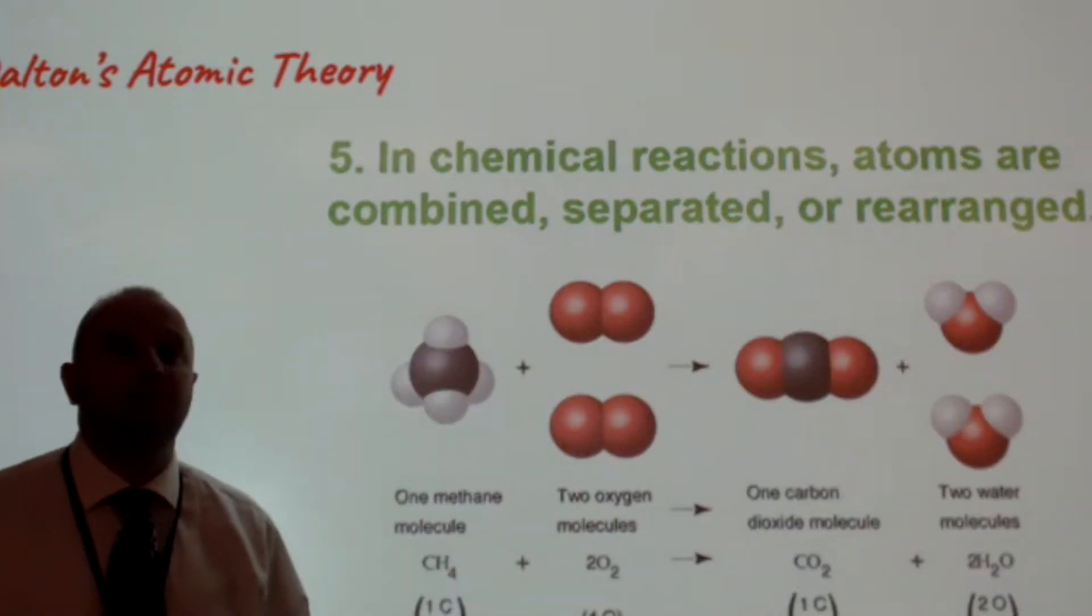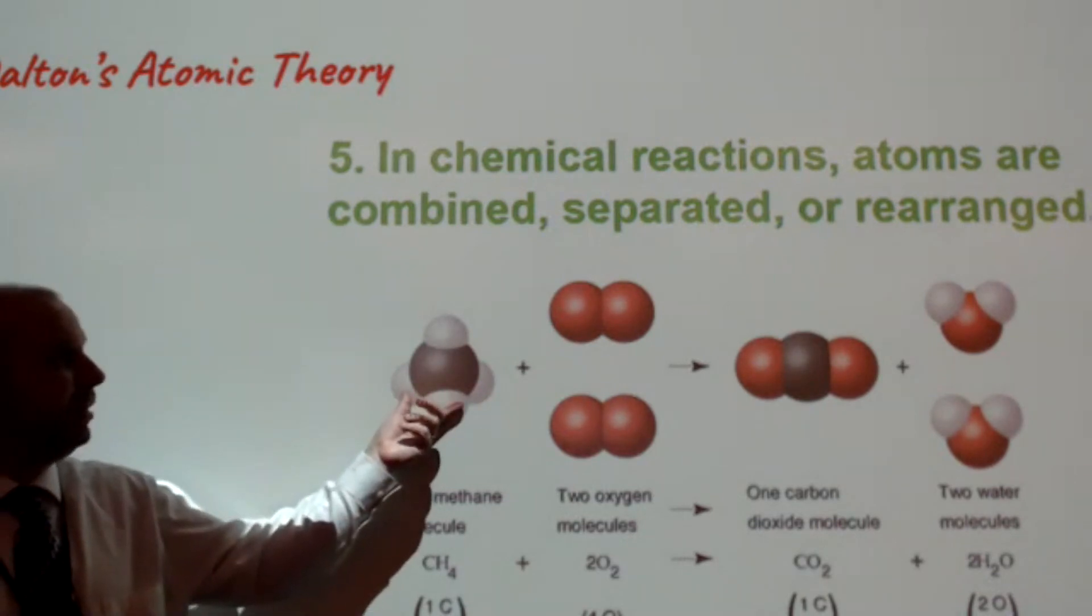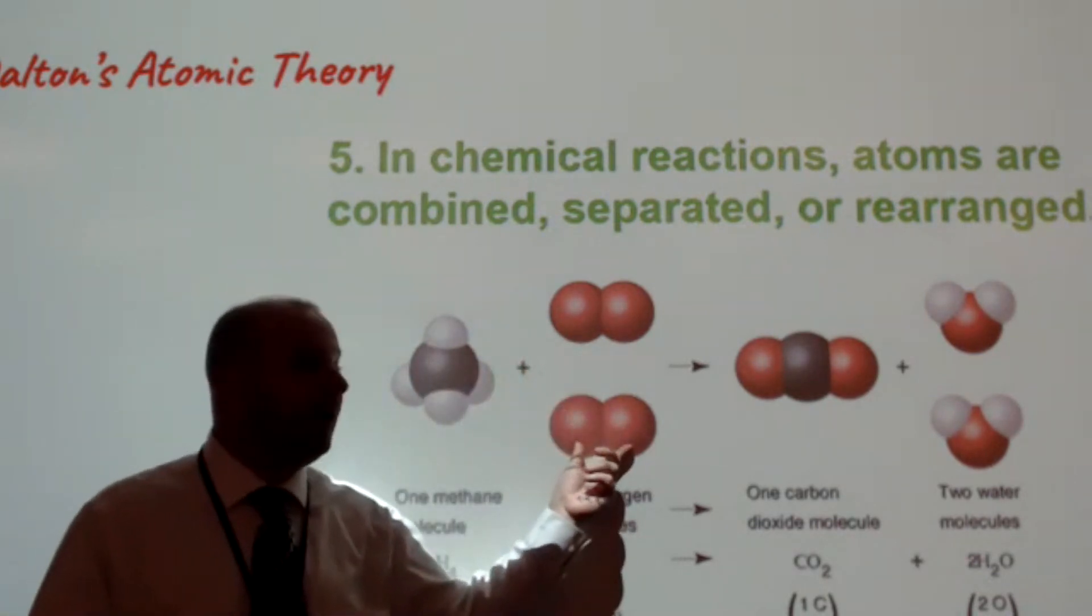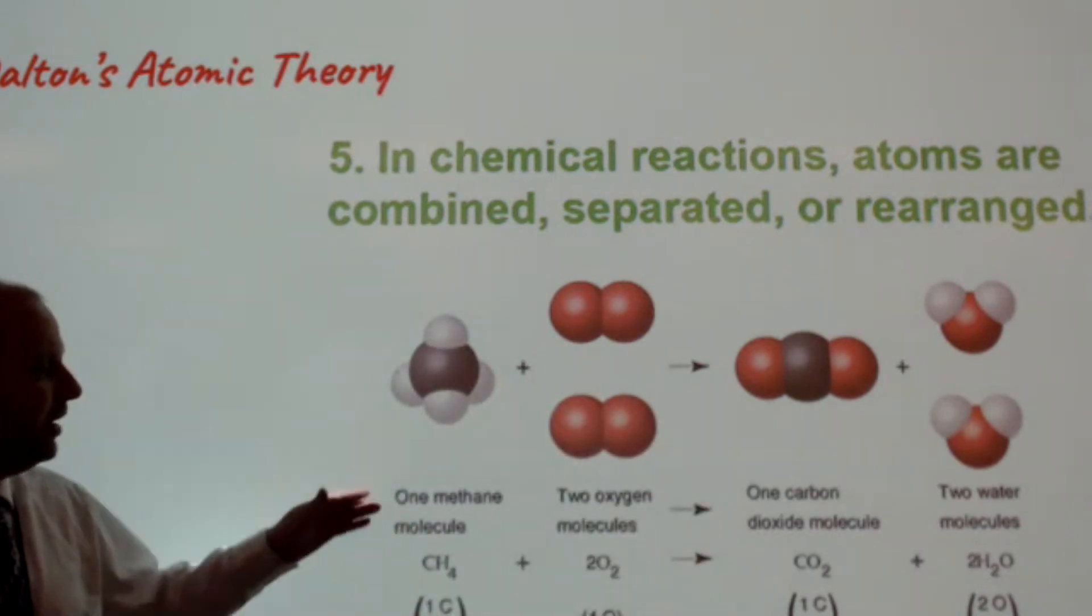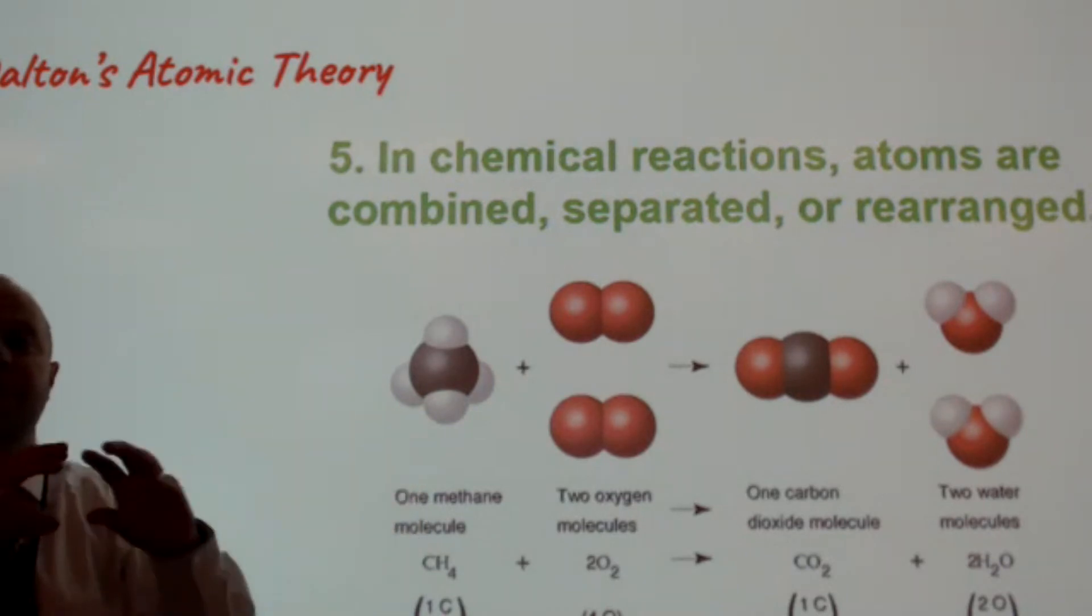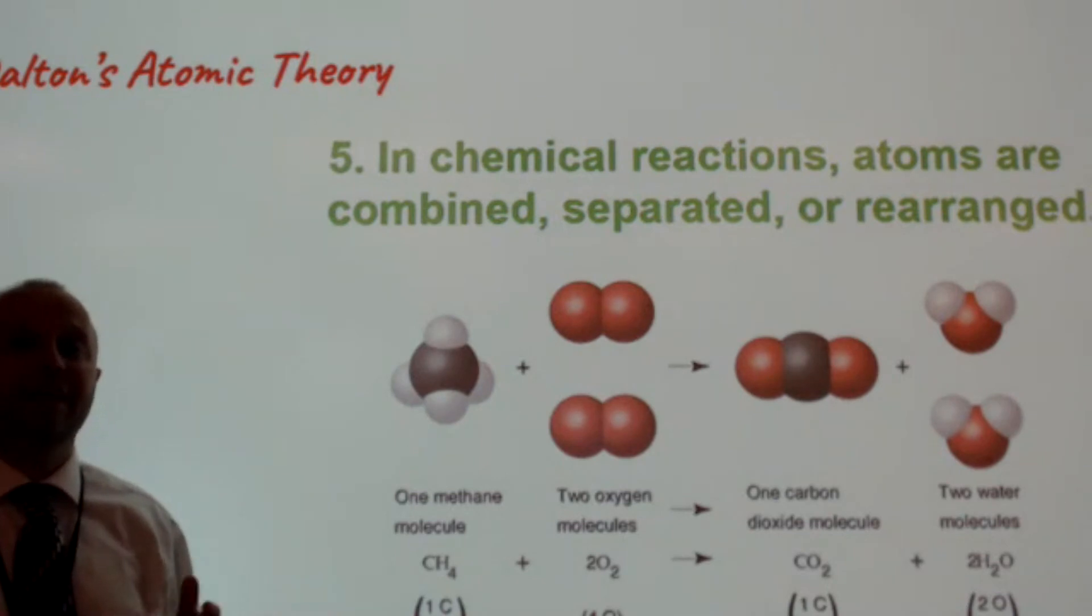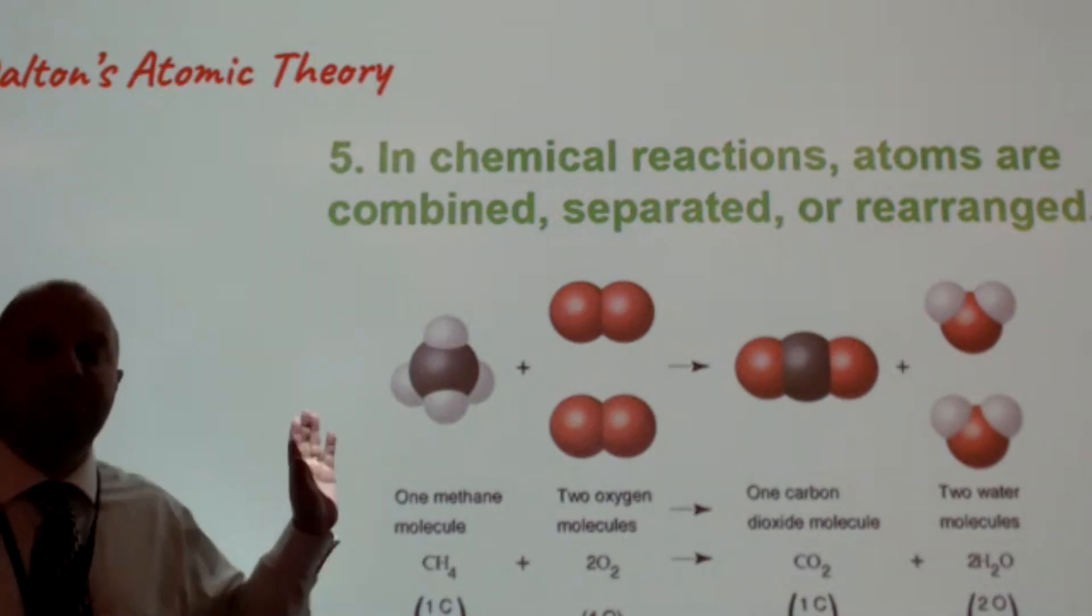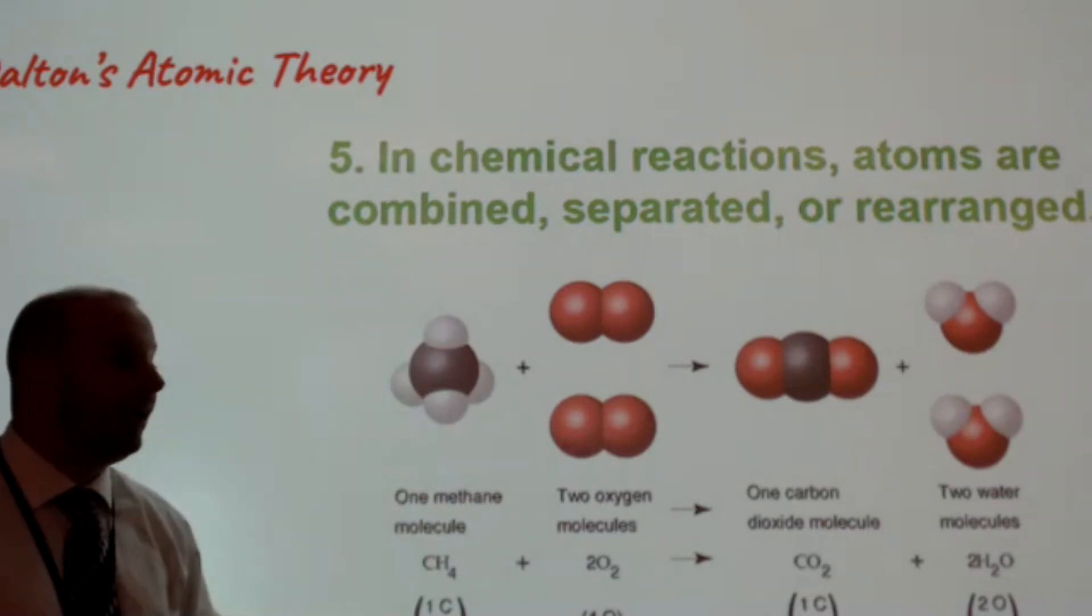Finally, Dalton's fifth postulate states that in chemical reactions, atoms are combined, separated, or rearranged. So in this case, we have a methane molecule reacting with two oxygens to form carbon dioxide and two water molecules. And you can see the breakdown for that here. All of the atoms are the same. They're just broken apart and put back together in a different way. Chemical reactions maintain the same number of atoms of each type on the reactant and product sides.